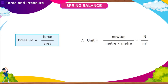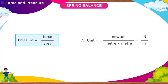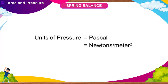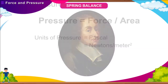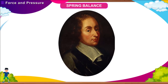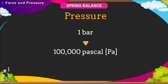The unit of pressure is N/m² in the SI system. This unit is also called pascal (Pa), named after the French scientist Blaise Pascal. The practical unit of pressure is the bar, which equals one lakh (100,000) pascal.